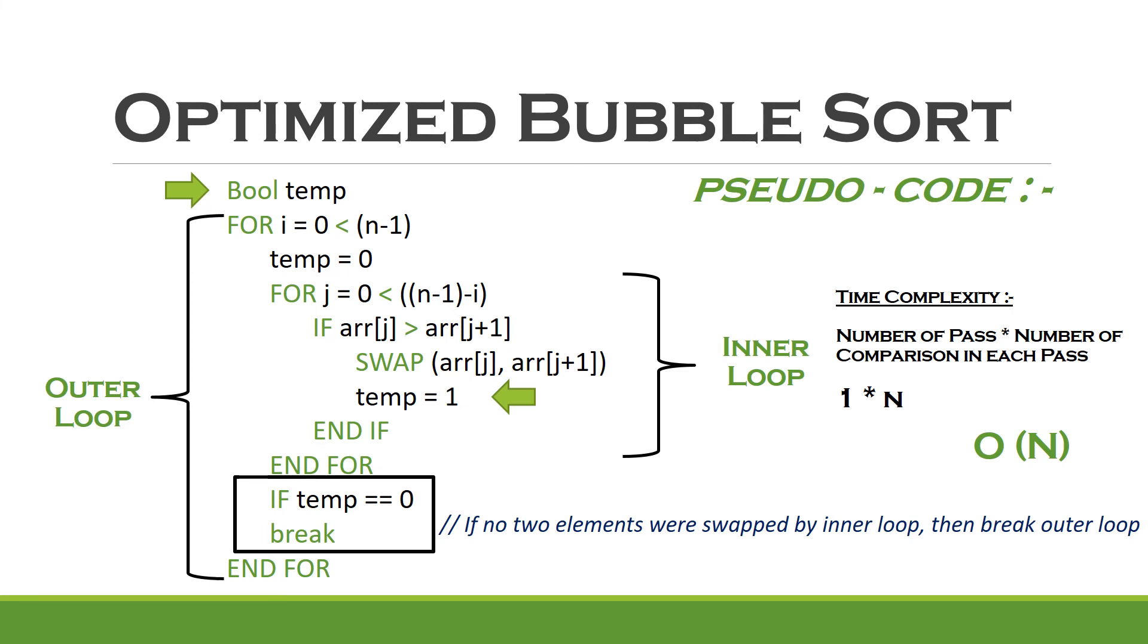In conclusion, bubble sort can be optimized by stopping the algorithm if there is no swap executed in the inner loop in a particular pass.